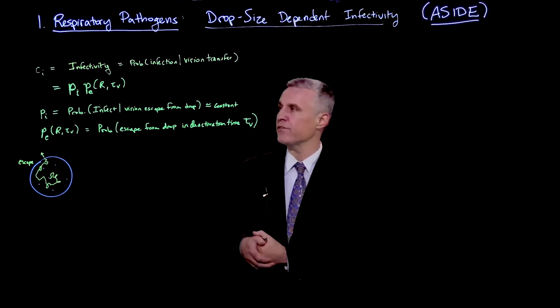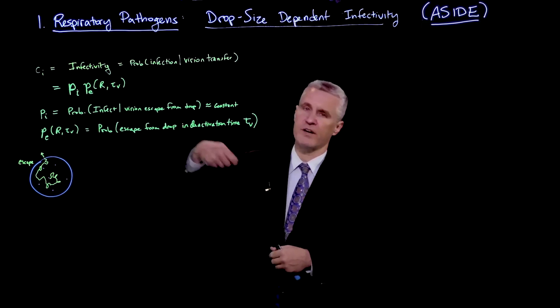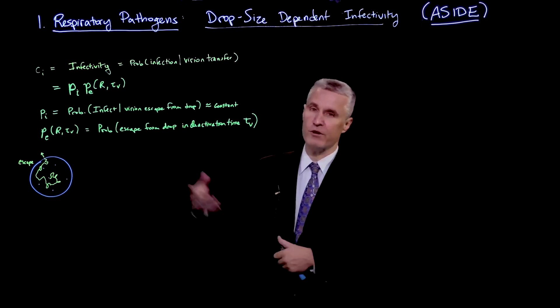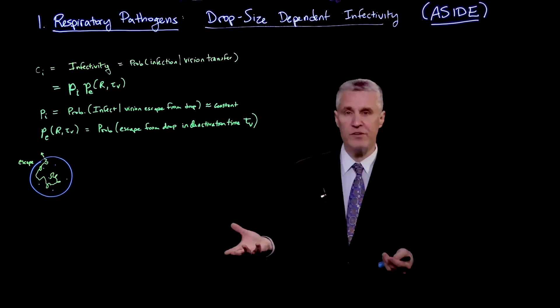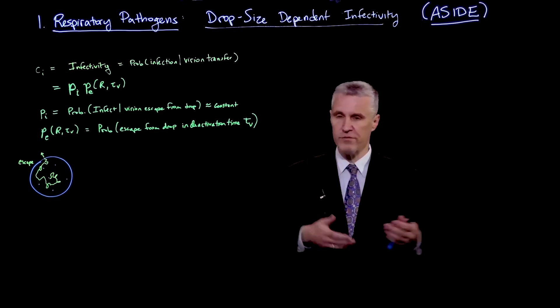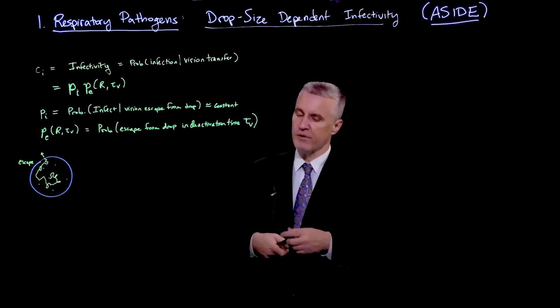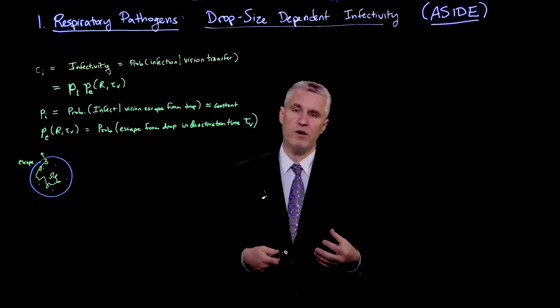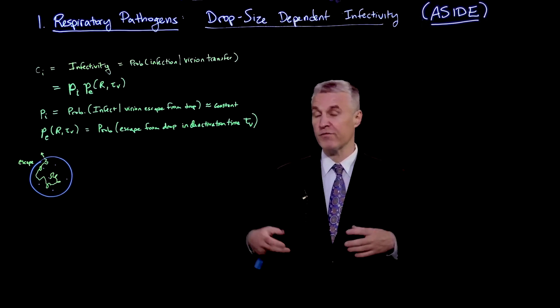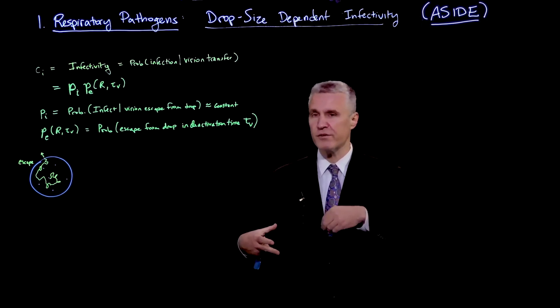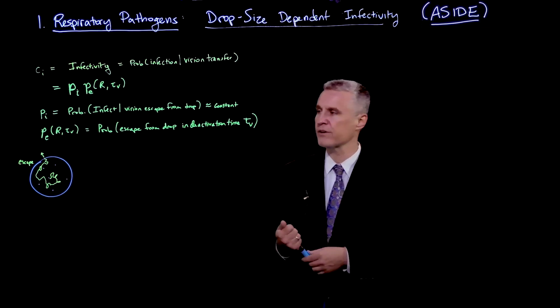That can be further broken down into a product of two probabilities. The first is that if the virus has escaped from the droplet, it actually causes an infection. That's perhaps something which is roughly constant, having to do with the physiology of the host. But then there is the escape of the virion from the droplet, which is a strongly size-dependent quantity. From very large droplets, it's very difficult in a mucus droplet for the virion to diffuse out in a reasonable amount of time.